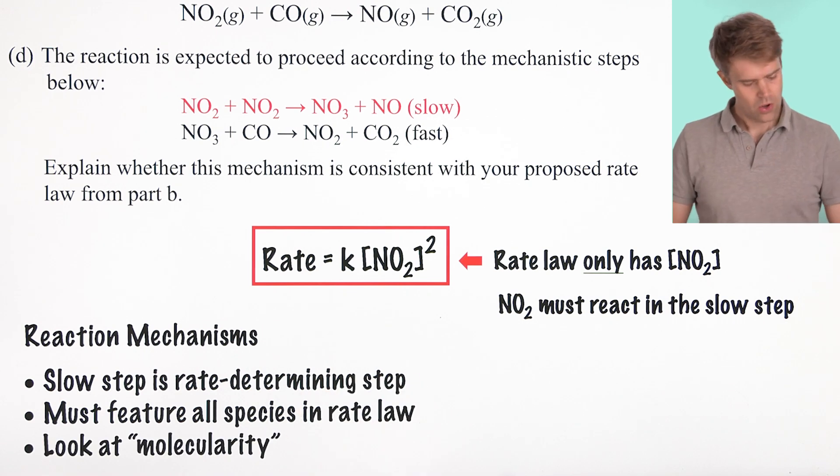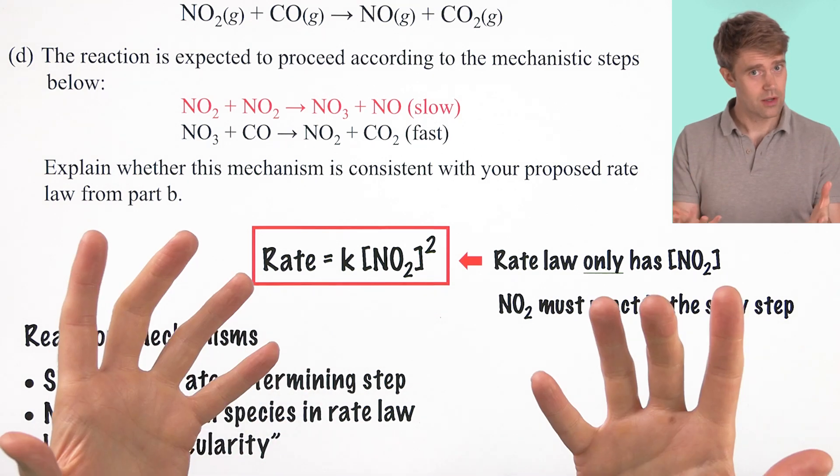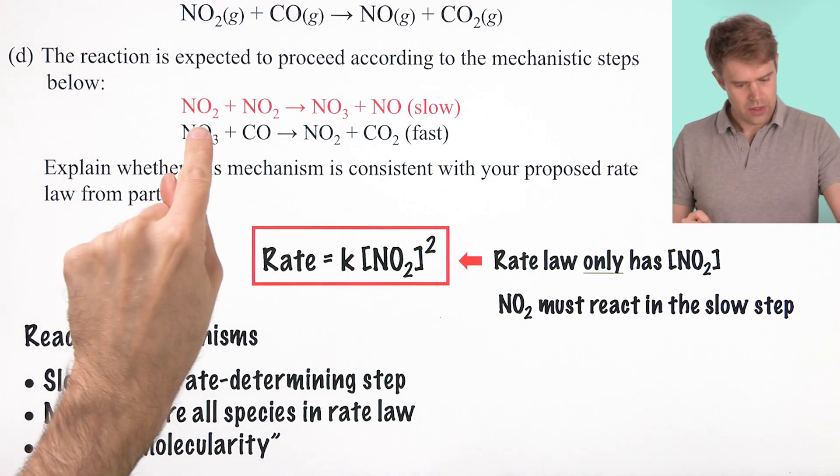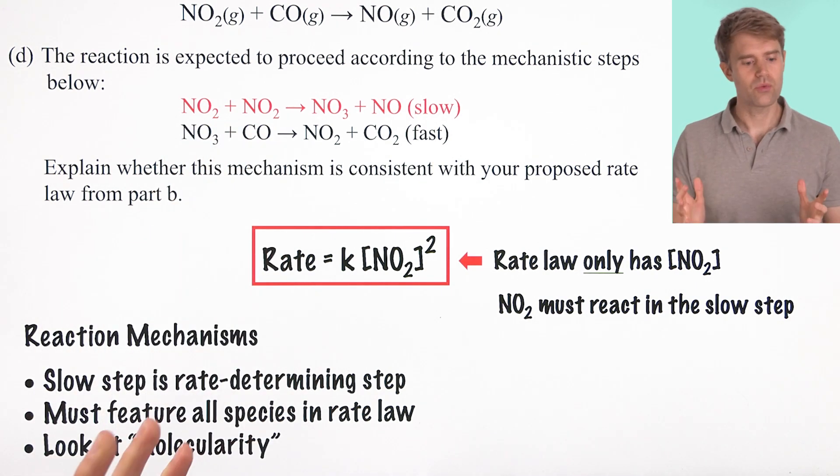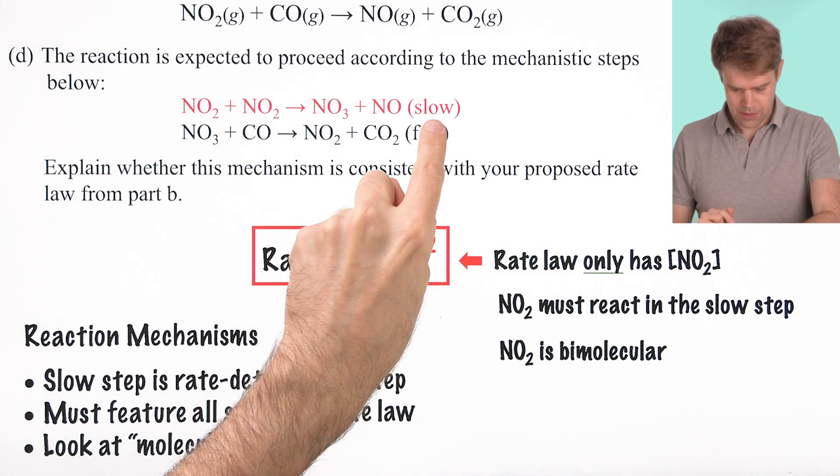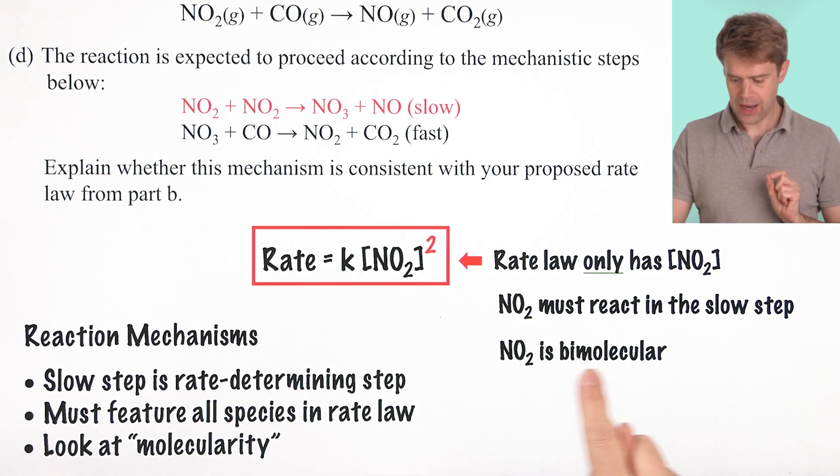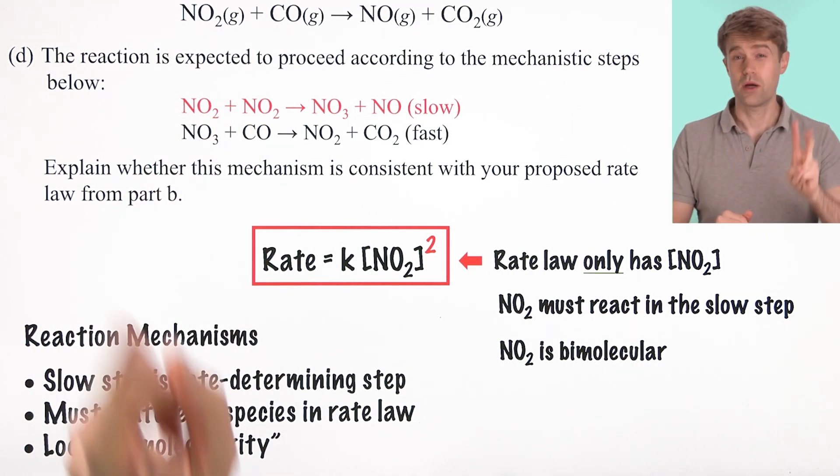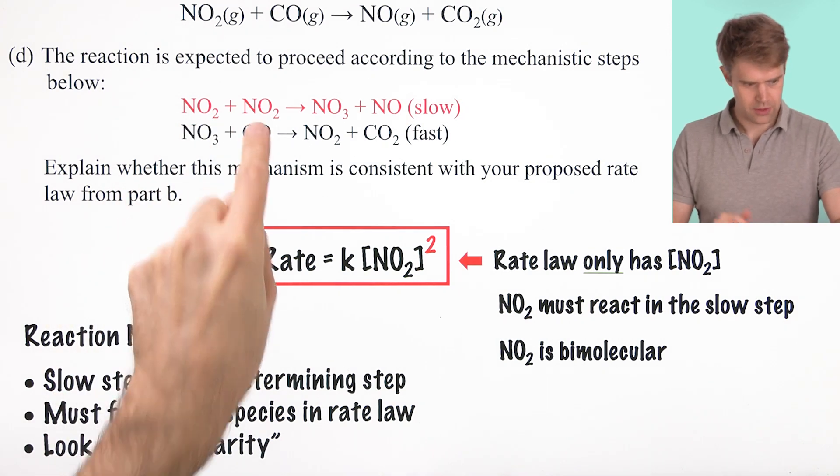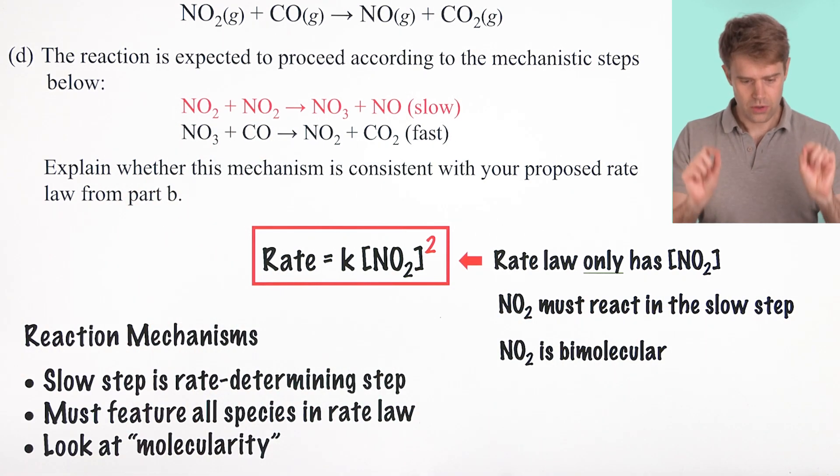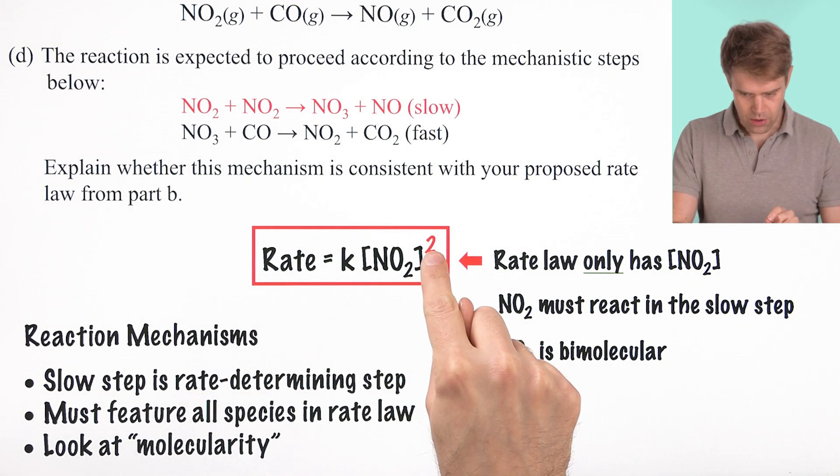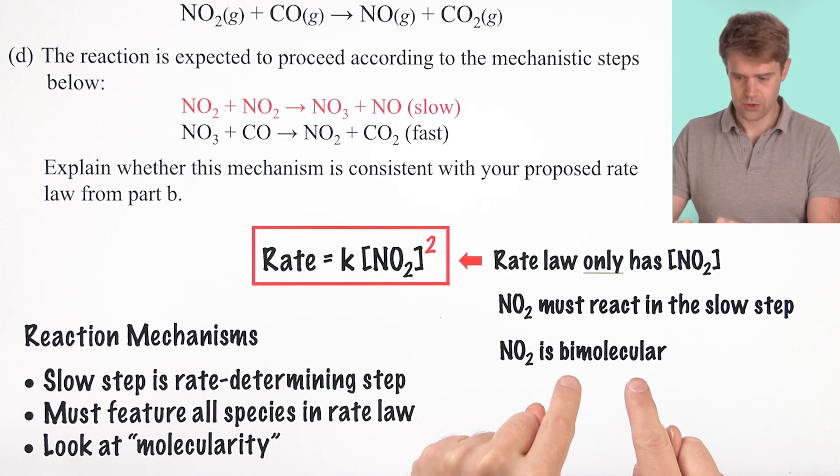And lastly, we want to look at the molecularity of the step. This is a fancy word that basically means how does the number of molecules impact the rate? For instance, our slow step here is bimolecular with respect to NO2. That means it requires two NO2 molecules to react. And, looking at our rate law, we see that NO2 is second order, which is consistent with a bimolecular step.